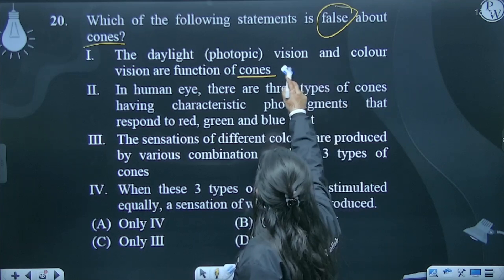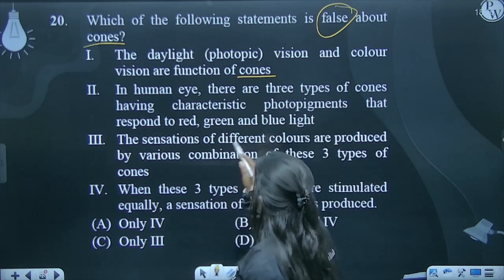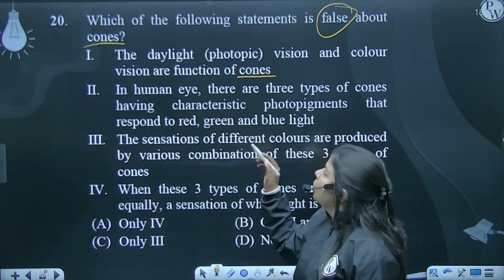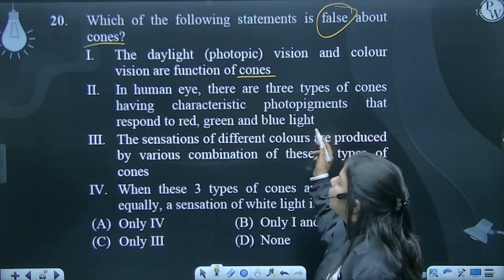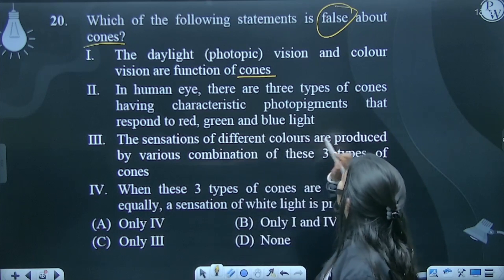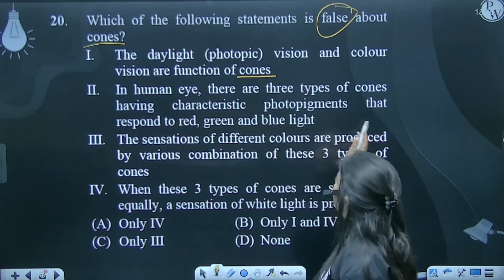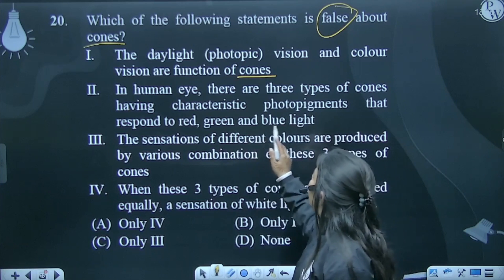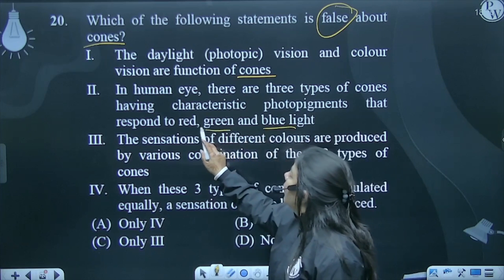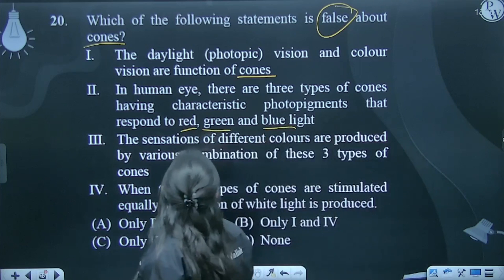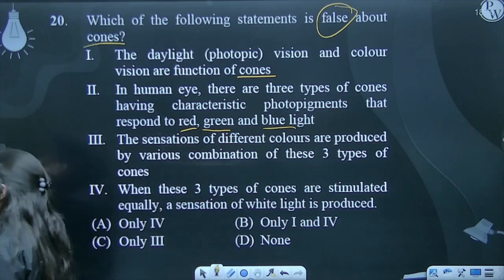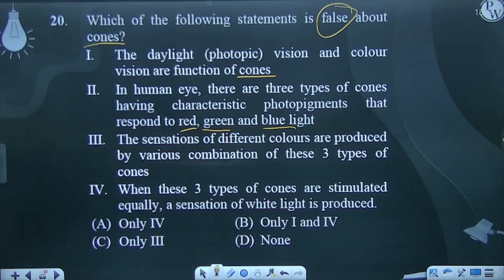So color vision is responsible. In human eye there are three types of cones having characteristic photopigments that respond to red, green and blue light. Characteristic pigments are present in the cones.